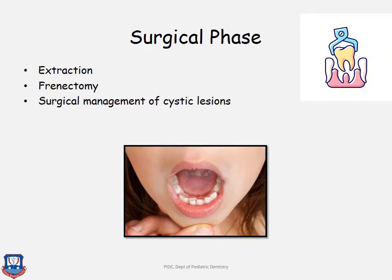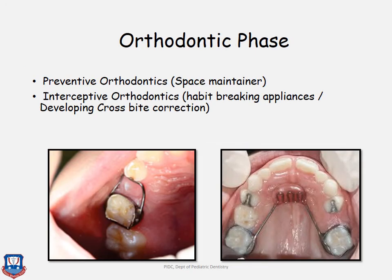In the surgical phase, grossly decayed teeth or teeth that are buccally or lingually erupting or retained primary teeth are extracted. Frenectomy is done if there is high frenal attachment. Surgical management of cystic lesions — any cysts associated with a tooth or present in the oral cavity — involves surgical excision.